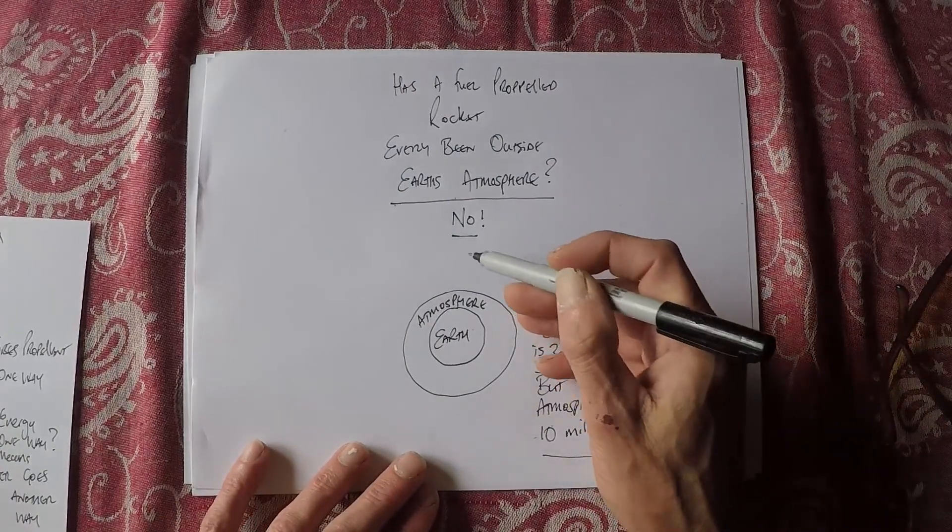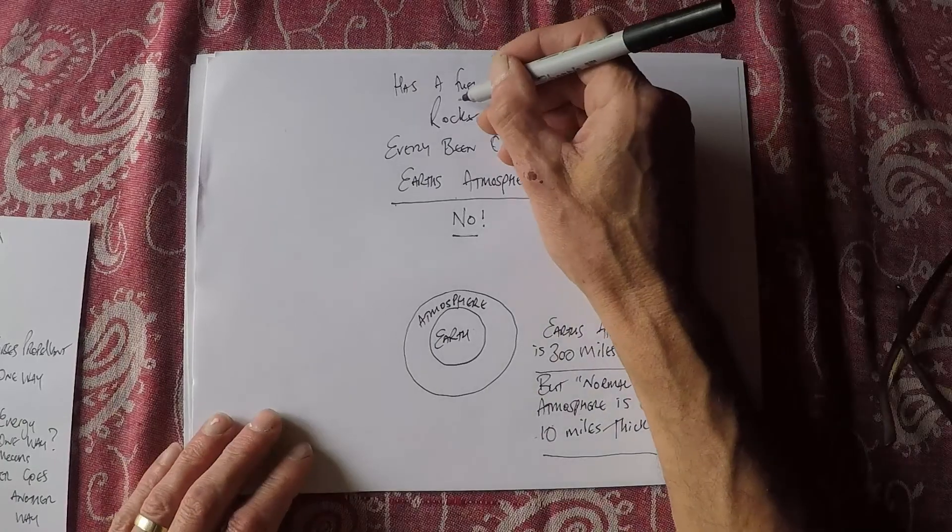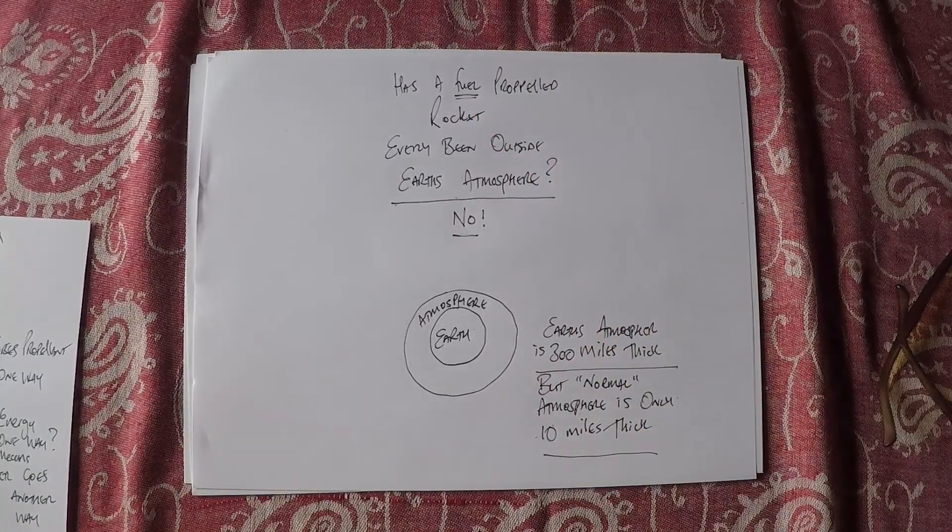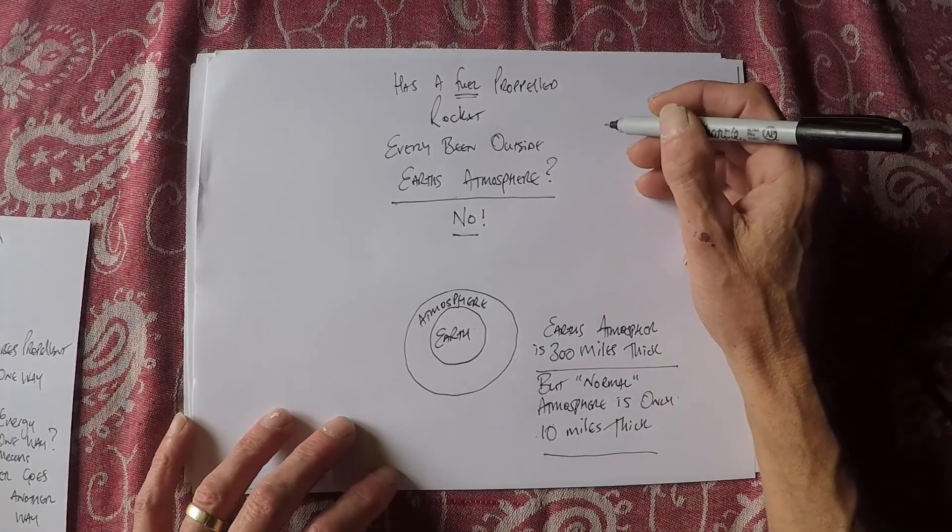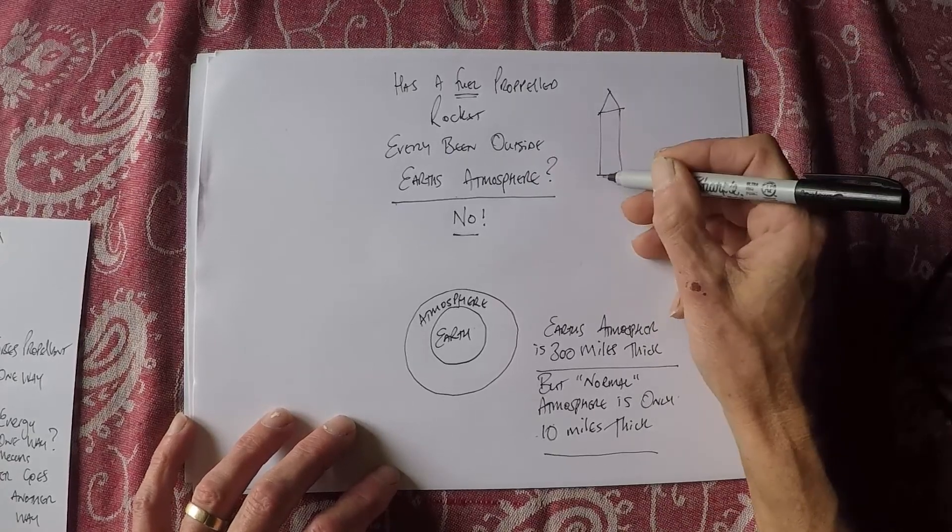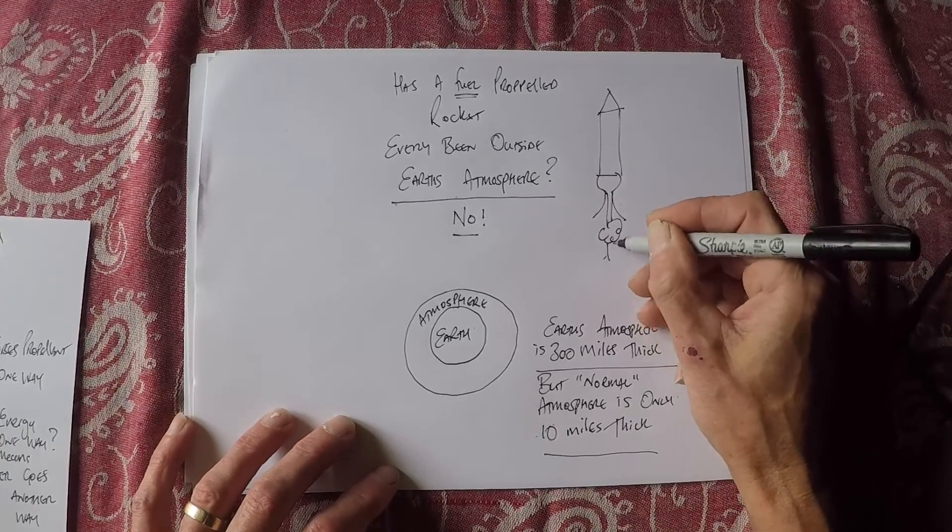Now I say no, a rocket has not propelled itself using fuel outside of Earth's atmosphere. Why is that? All right, well let's look at what a rocket does. Let's get us a rocket.